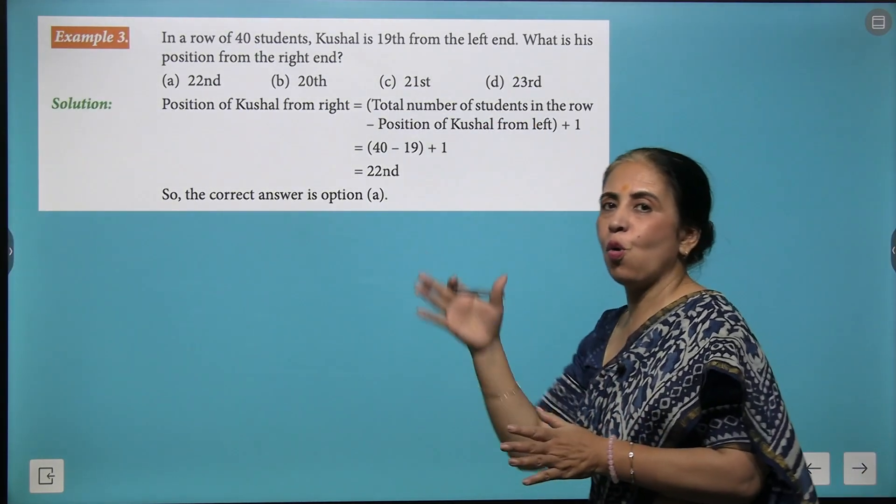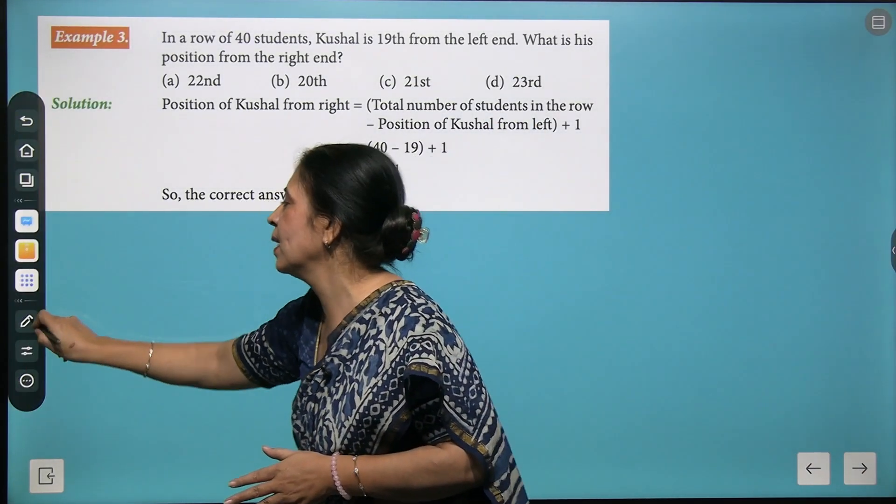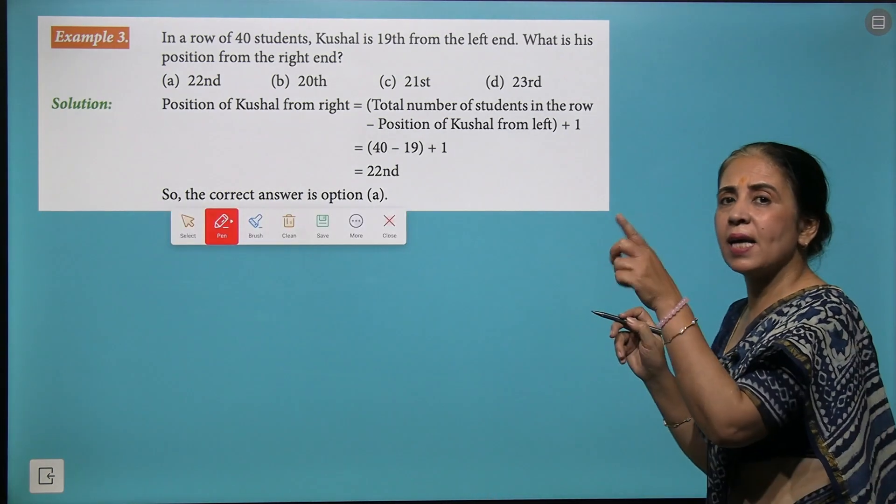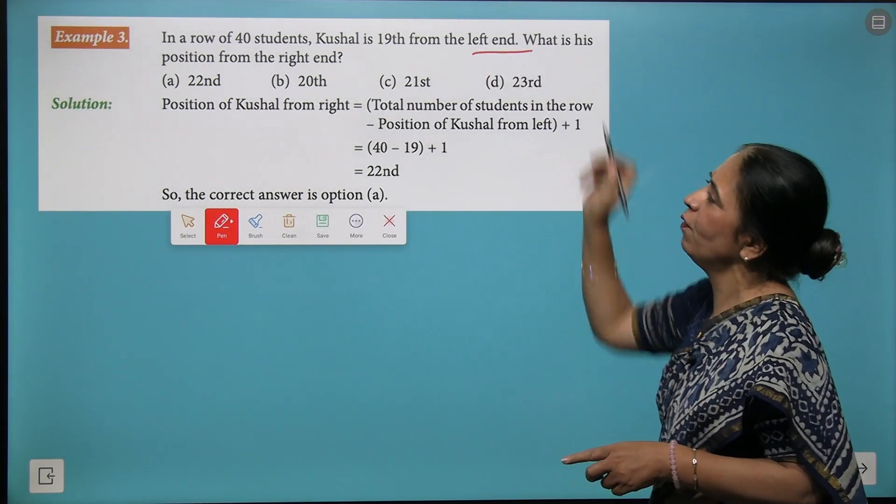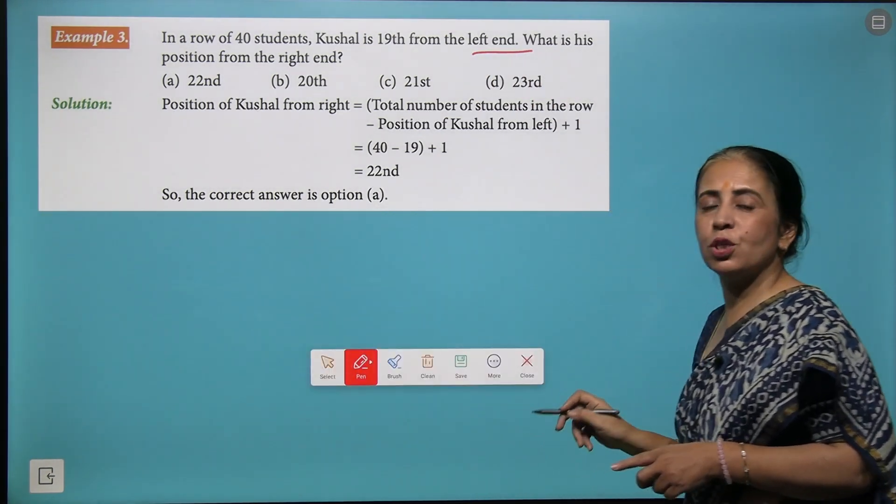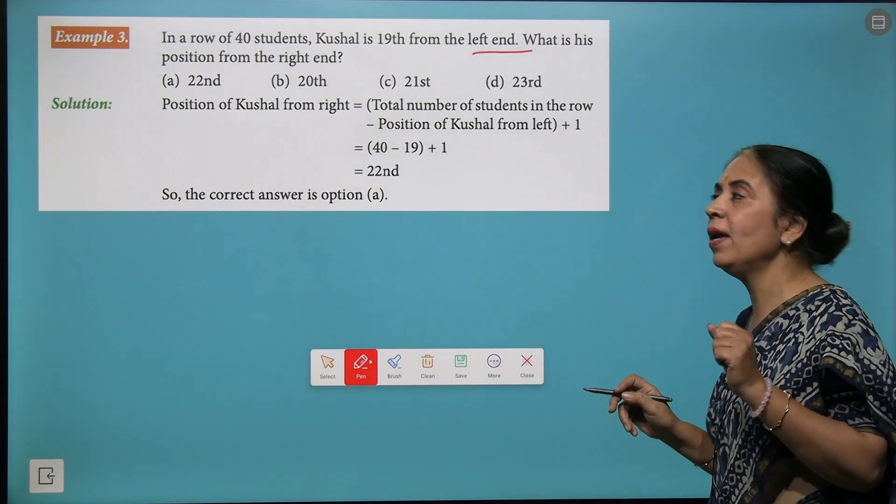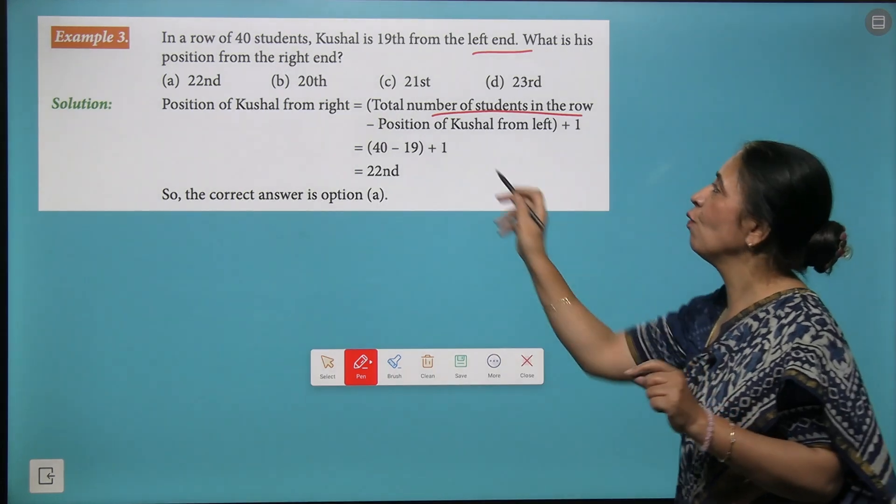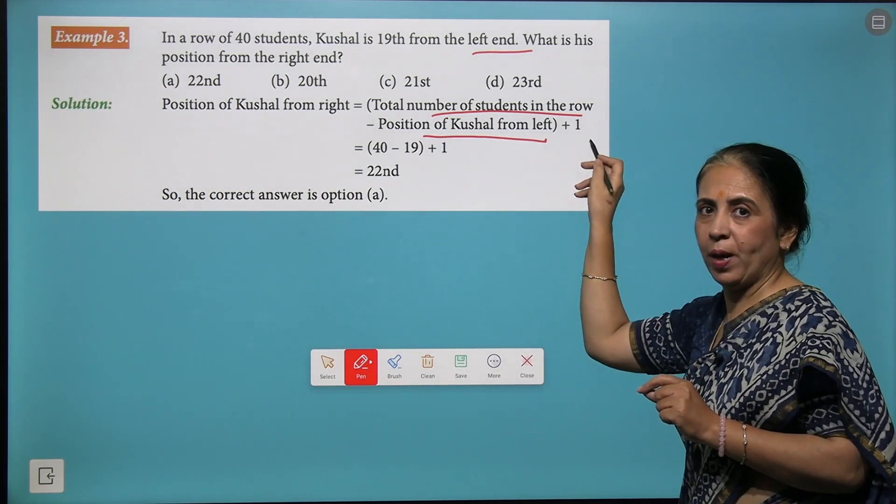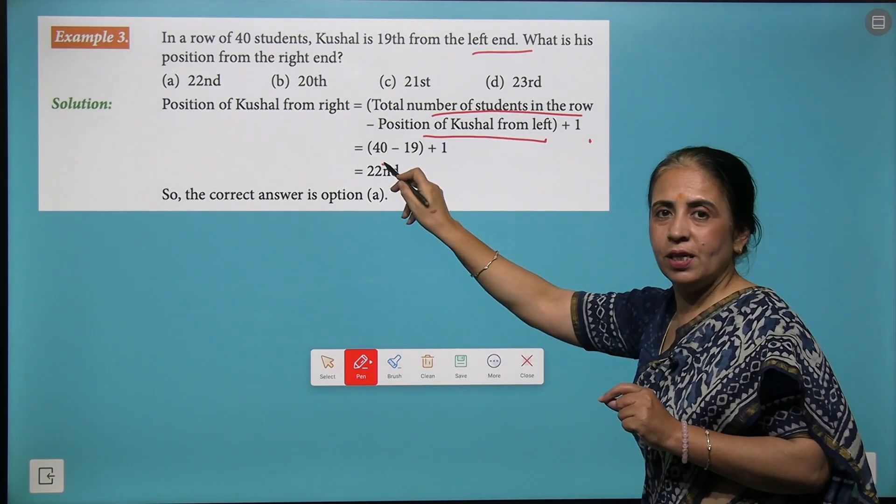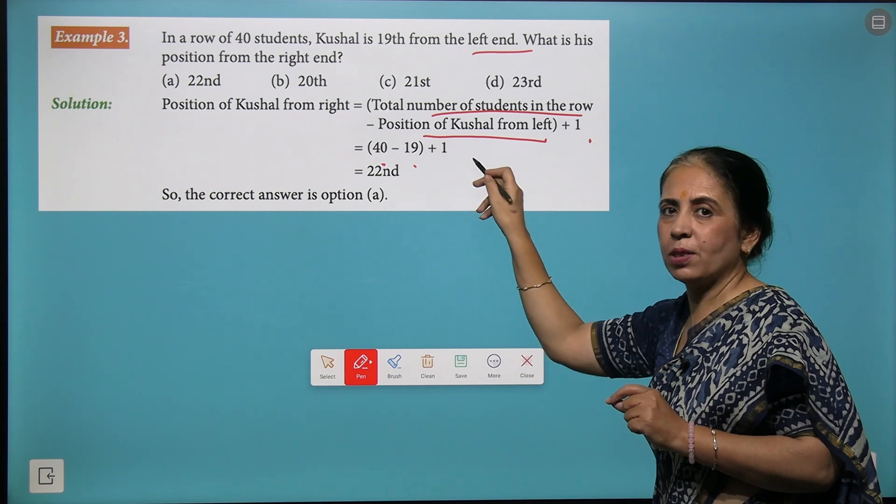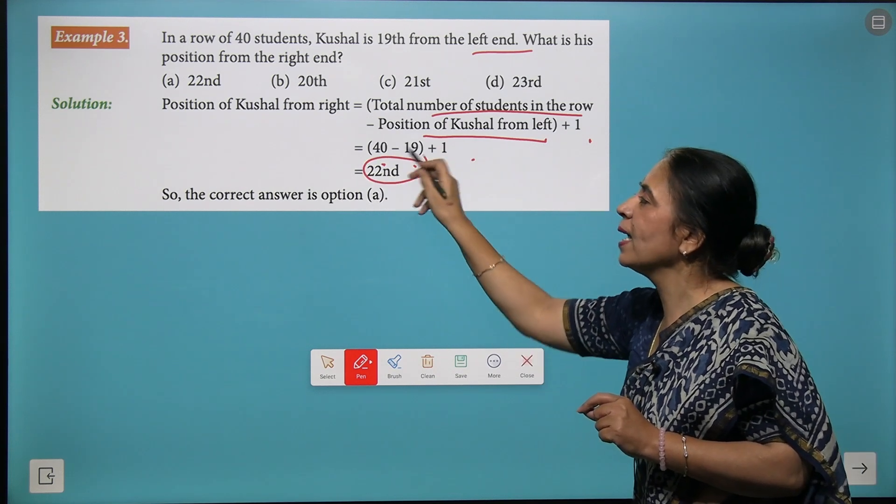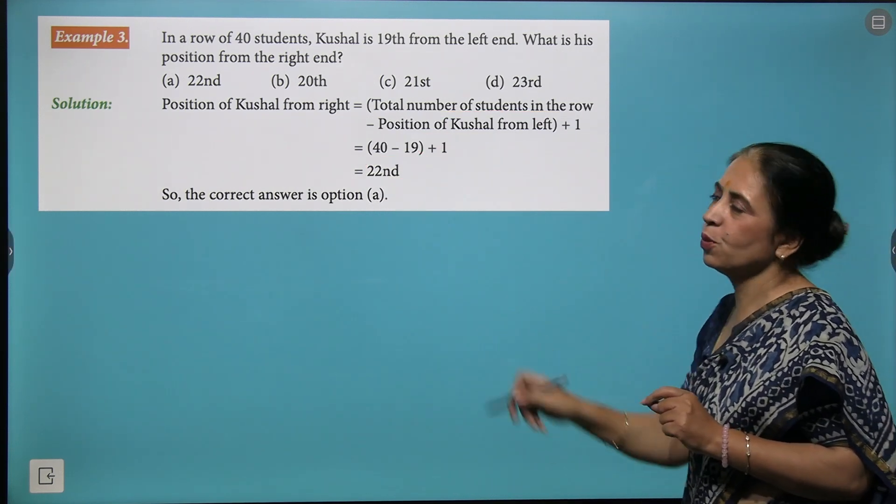Next example: we have a row of 40 students here, and Kaushal is at 19th from the left hand. So his position from the right hand will be equal to total number of students in the row minus position of Kaushal from the left plus 1. So we write 40 minus 19 plus 1, and 22nd position is his position from the right hand.